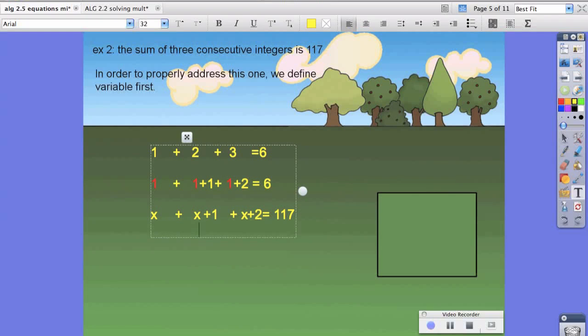Then we're going to combine like terms and get 3x plus 3 equals 117. We're going to subtract 3 to both sides and get 3x equals 114. Then we're going to divide 3 to both sides to isolate the variable, and we are left with x equals 38.